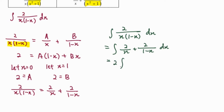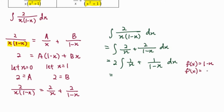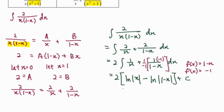We can factor out the 2 to simplify. For 1 over x, the integral is ln|x|. For the second part, when f(x) is (1-x), differentiating gives negative 1, so we multiply by negative 1 divided by negative 1. The result is negative ln|1-x|. Because of ln minus ln, we simplify the final answer as 2 times ln|x/(1-x)| plus C.